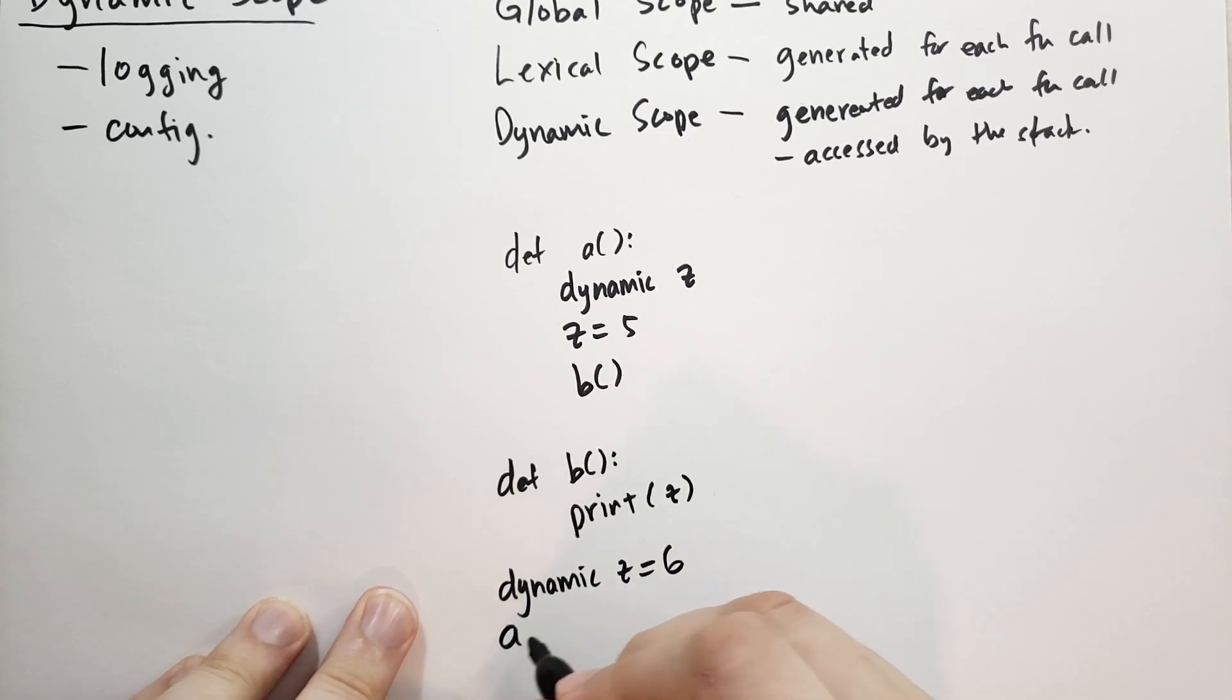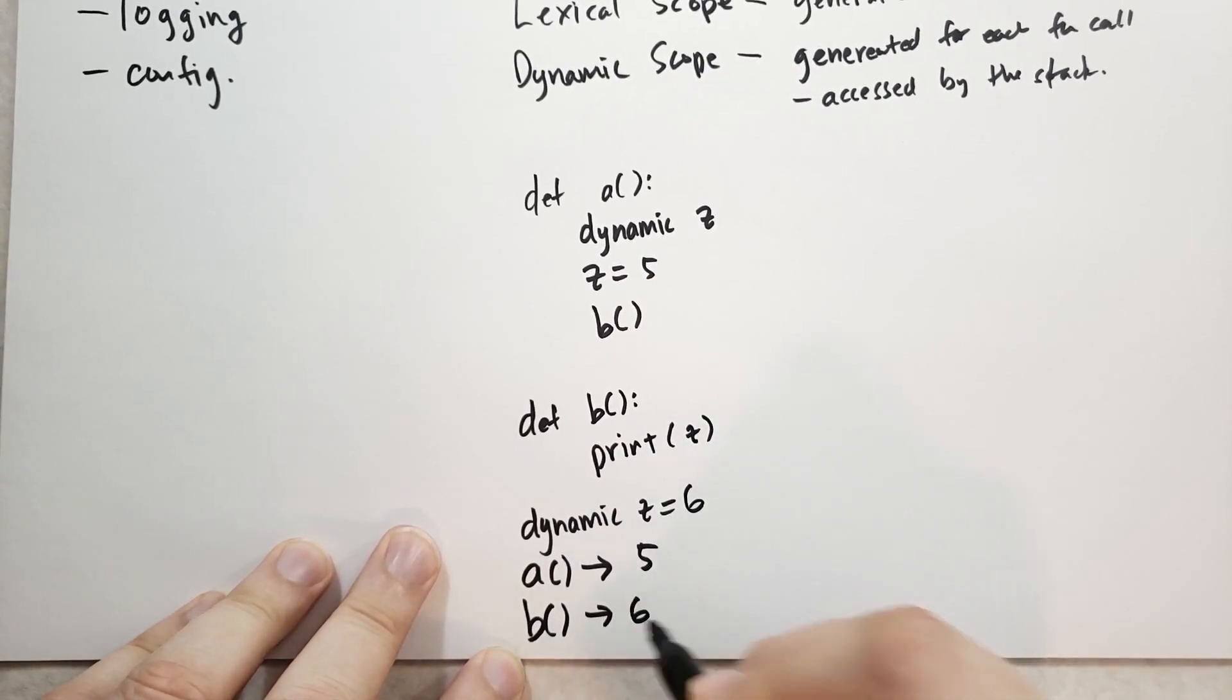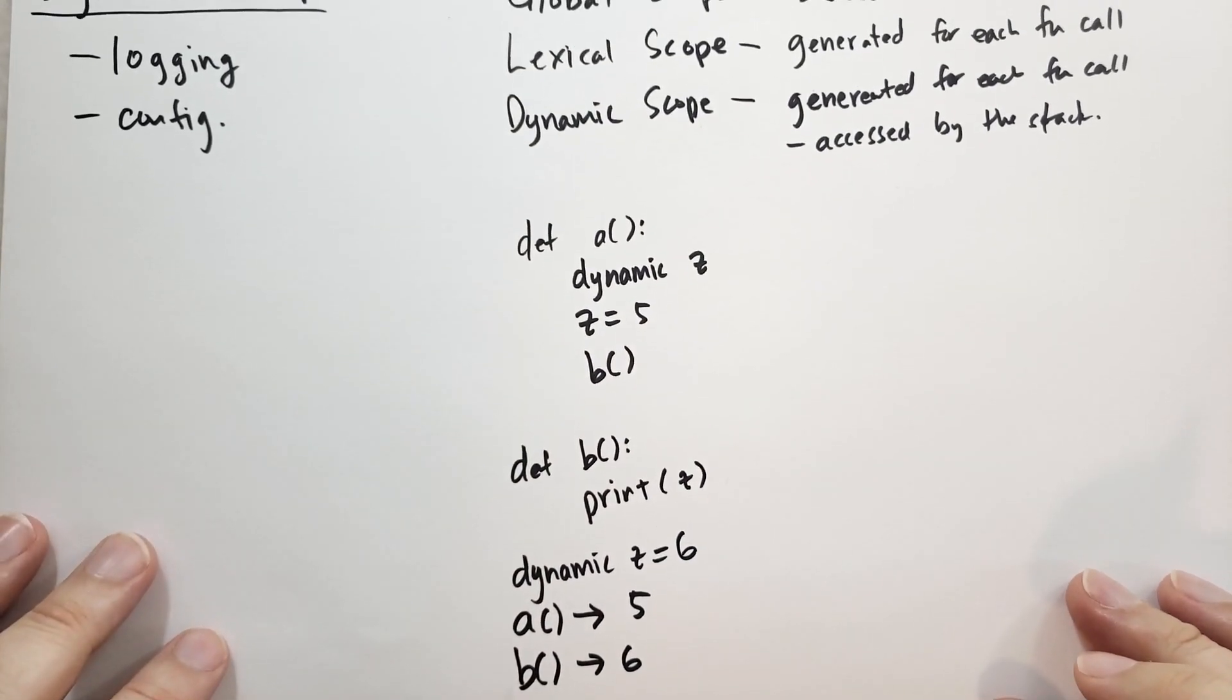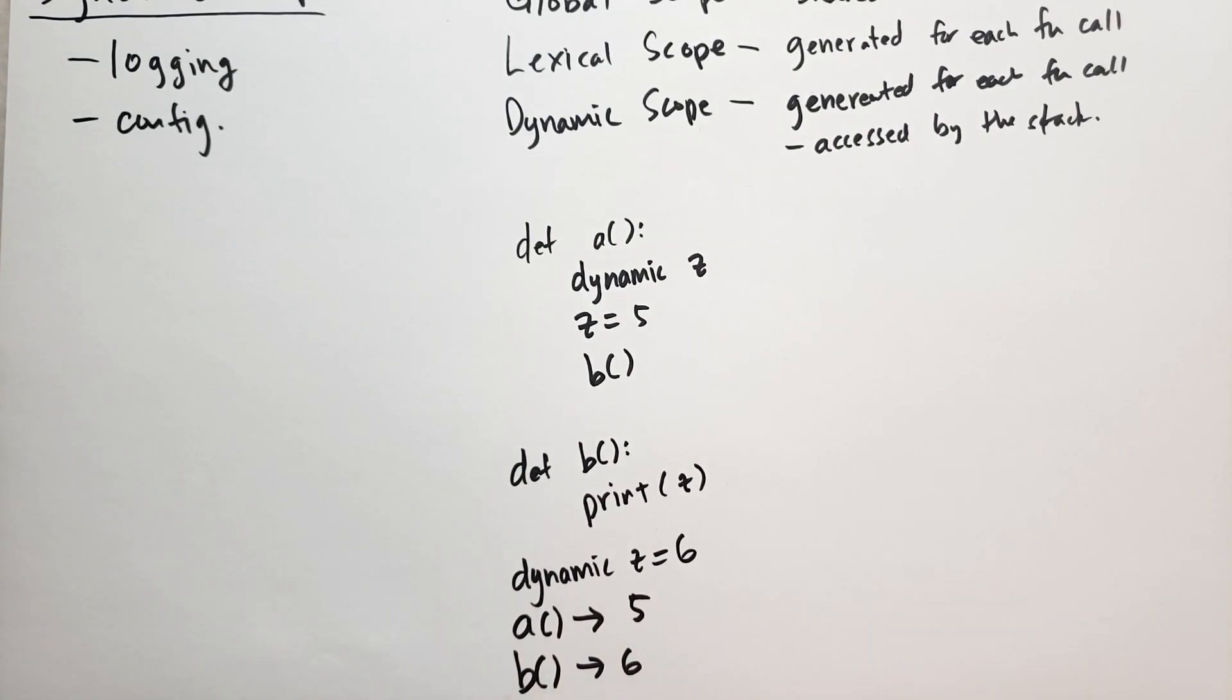And then when you call a, it's going to print five. But if you were to call b, it would print six. What's going on here? Why would that do that? Well, in dynamic scope,